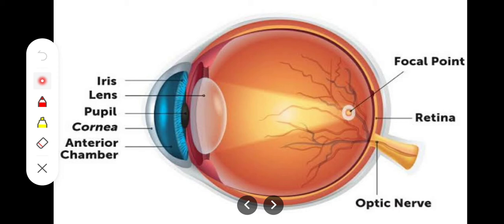Grossly, the middle dark opening you see in the eye is the pupil — simply an opening within the iris. The colored portion of the eye is called the iris, and the middle dark hole is the pupil. The pupil is surrounded by the iris, and the cornea overlies both the iris and the pupil.